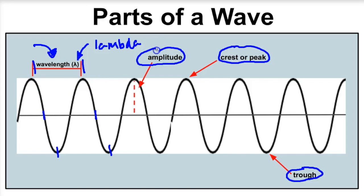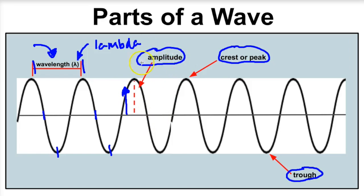Last but not least, we have amplitude, or wave height. This is how high the wave travels above the baseline. The baseline is the reference line, and amplitude is how high above that baseline the wave is. Make sure you understand these different parts of a wave: amplitude, crest or peak, trough, and wavelength.